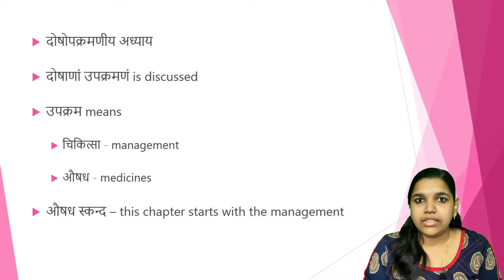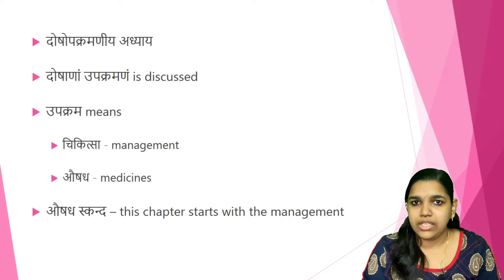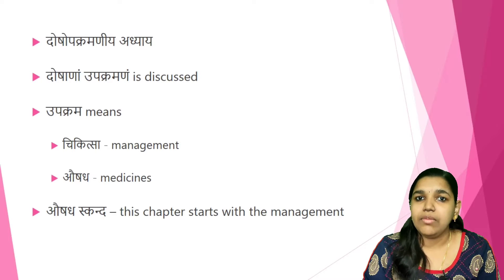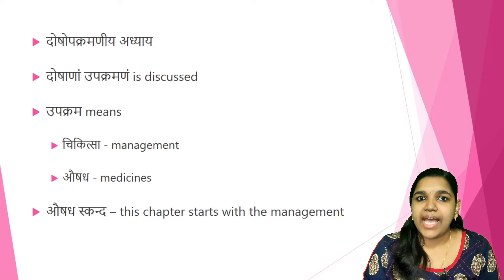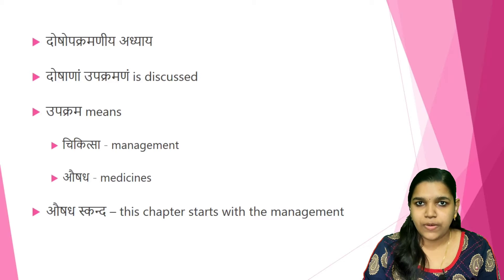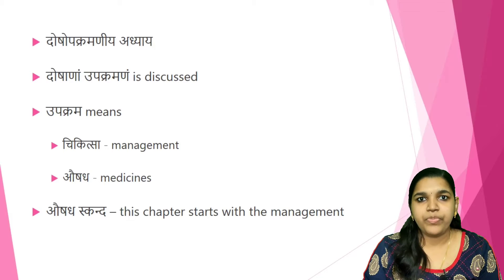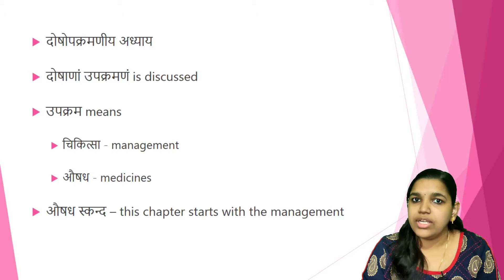From this 13th chapter, Dosha Upakramaniya Adhyaya, the Aushatha Skanda begins. Dosha Upakrama means Doshanam Upakramana — the Chikilsa or Aushatha, that is the management and medicines used to cure diseases or control Doshas. The next three chapters discuss the Aushatha Skanda, covering various kinds of management and the drugs used in each condition.